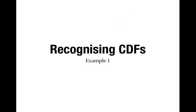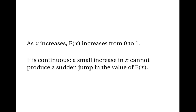The last thing to be able to do is recognise when a function is a valid cumulative distribution function. There are two conditions. First, as x increases, F of x has to increase, starting from 0 and ending up at 1. Second, F must be a continuous function — a small increase in x can't produce a sudden jump in the value of F of x. This is because you obtain the CDF by integrating the PDF, and moving a little to the right can only include a tiny bit more area.